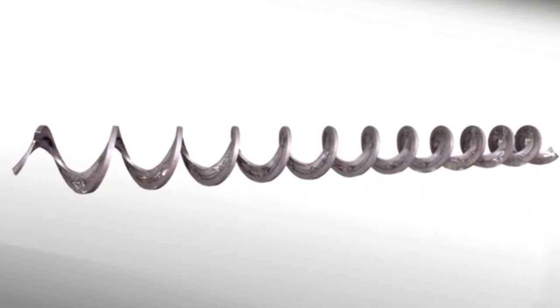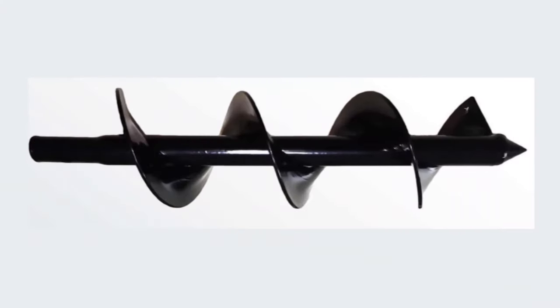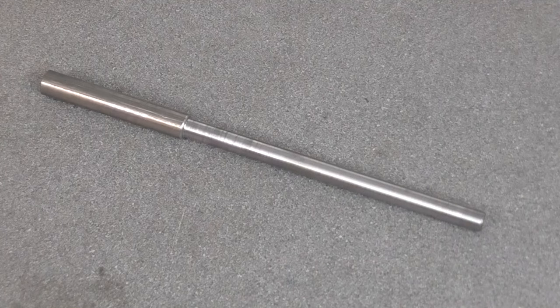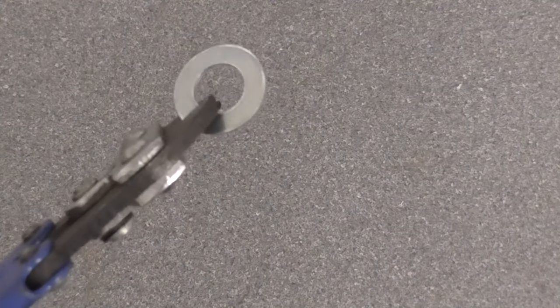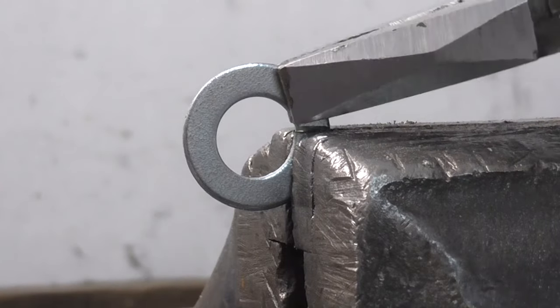Or you can make a spiral and weld it onto a rod or tube. A common way to do this is to start with washers, cut them, and stretch them out.